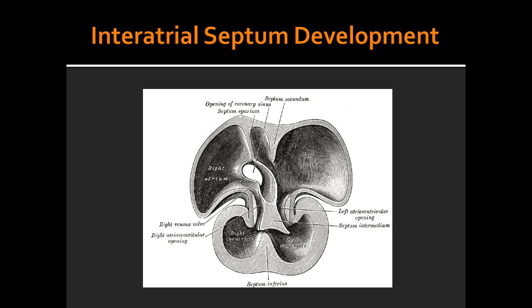What are the remaining steps of the interatrial septum development? The remaining steps are that the portion of the septum primum that remains will form the valve of foramen ovale. Septum secundum and septum primum will fuse together to form the atrial septum, and foramen ovale usually closes after birth due to an increase in left atrial pressure.